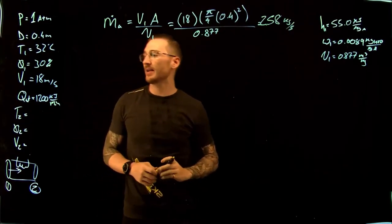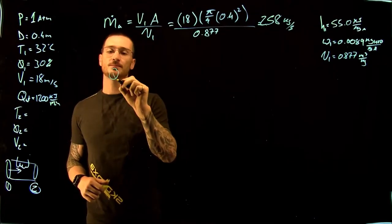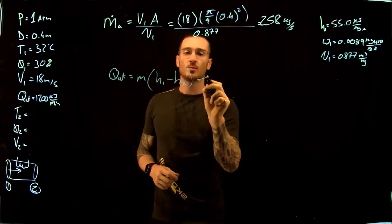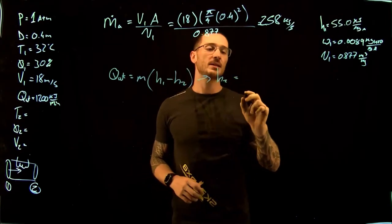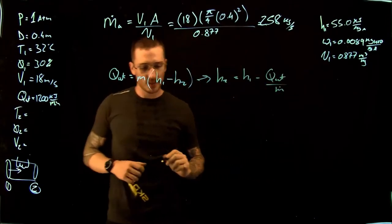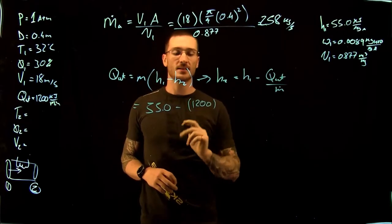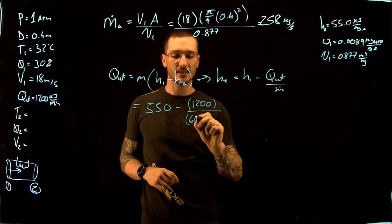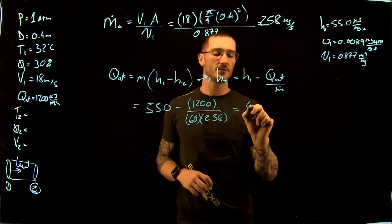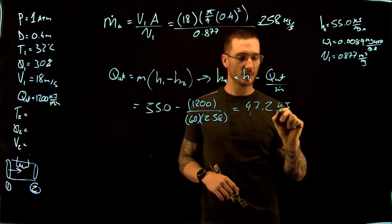From the problem statement, energy leaves at a rate of 1200 kJ/min. So Q_out equals mass flow rate times (h1 − h2). Rearranging, h2 equals h1 minus Q_out divided by the mass flow rate. This gives us 55.0 − (1200/60) / 2.58, so the enthalpy at point 2 is 47.2 kJ/kg of air.